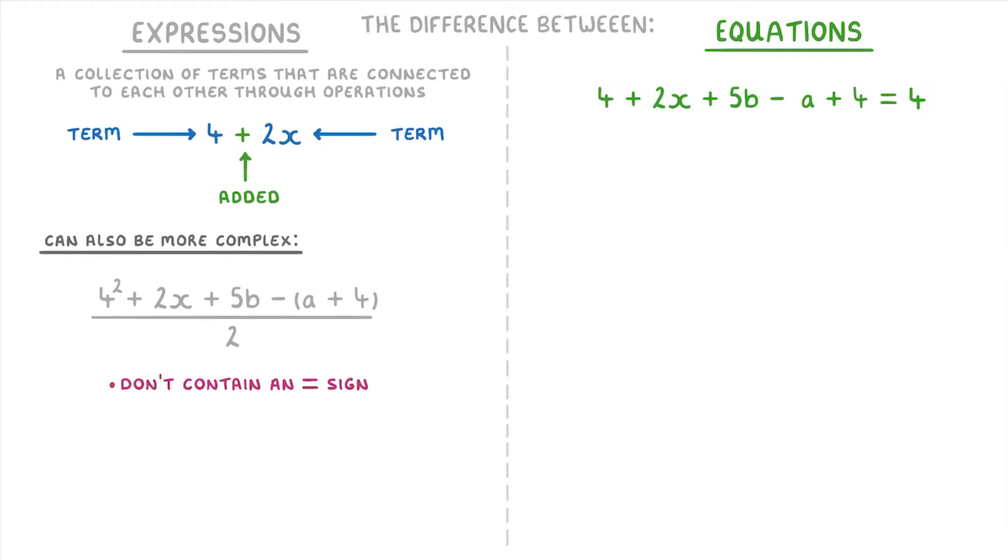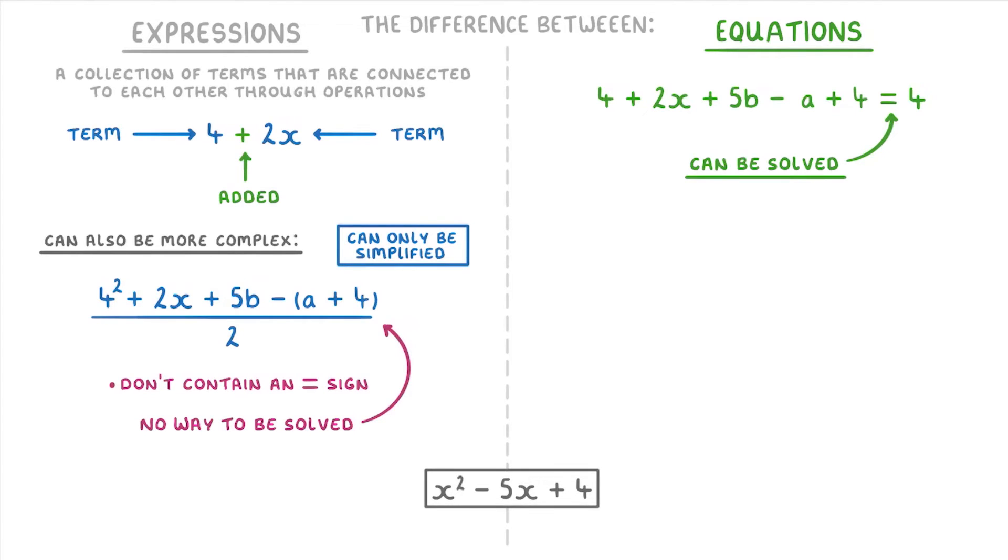Because equations have equal signs, they can be solved, whereas there's no way to solve an expression. It can only be simplified. So if we had x squared minus 5x plus 4, that would be considered an expression because there's no equal sign in it.